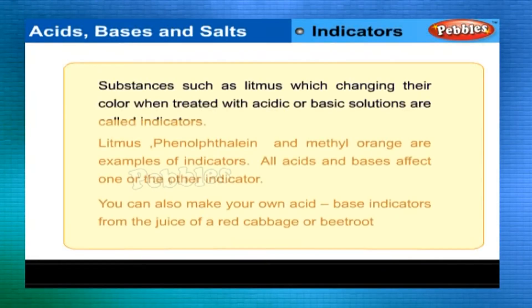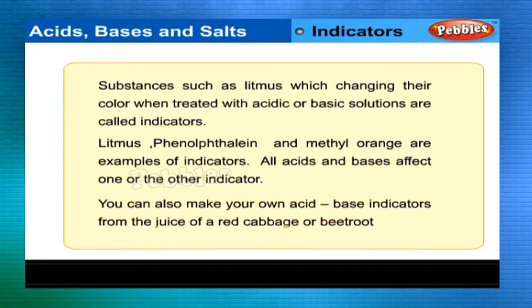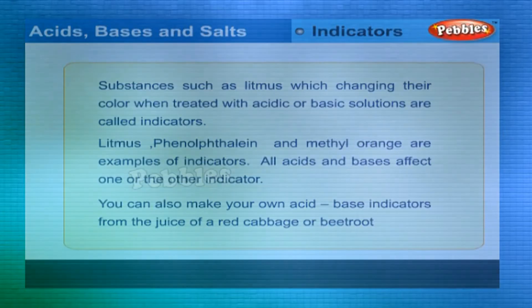Indicators. Substances such as litmus, which change their color when treated with acidic or basic solutions, are called indicators. Litmus, phenolphthalein and methyl orange are examples of indicators. All acids and bases affect one or the other indicator. You can also make your own acid-base indicators from the juice of red cabbage or beetroot.